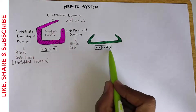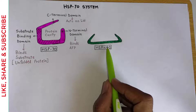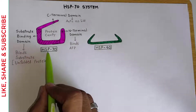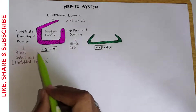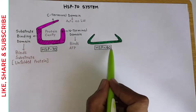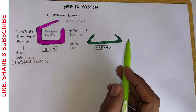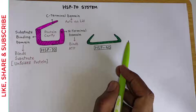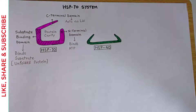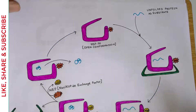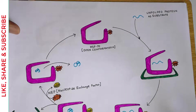Coming to the HSP40 protein, this HSP40 helps the HSP70 protein in protein folding. So we call this HSP40 protein a co-chaperone. Now coming to the second part of the video — the mechanism of action of the HSP70 system.